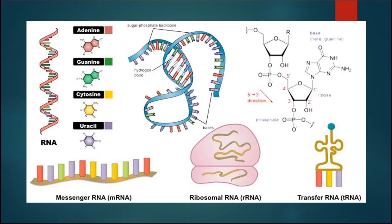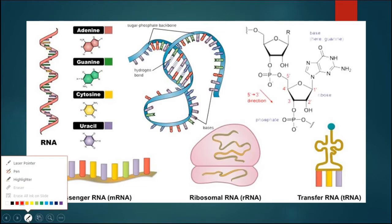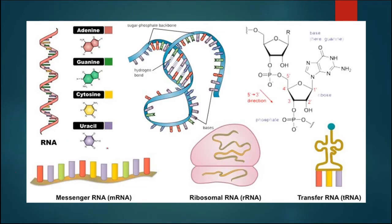In this slide, we can see the structure of RNA — a single helical structure — and the types of RNA. There are three types of RNA which help in protein synthesis: first, messenger RNA, which is transcribed from DNA; second, ribosomal RNA, having two subunits — smaller and bigger; and third, transfer RNA, also known as sRNA or soluble RNA. All three types of RNA are required for the formation of the protein chain.